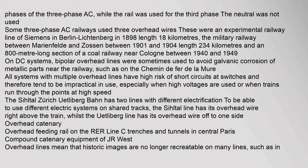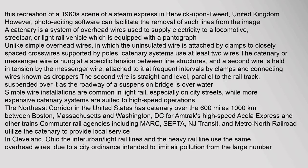The Sihltal Zürich Uetlibergbahn has two lines with different electrification to use different electric systems on shared tracks — the Sihltal line has its overhead wire right above the train, while the Uetliberg line has its overhead wire off to one side. Compound catenary equipment on overhead lines means that historic images are no longer recreatable on many lines, though photo editing software can facilitate the removal of such lines from images.